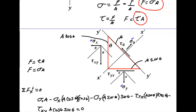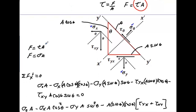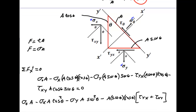Since force equals normal stress times area and shear stress times area, I'm going to sum up all the forces along the x-prime axis. For the normal stress on the x-face, the area is defined as the area across that face, so the force is that normal stress times A. For the adjacent face, the area is A times cosine theta, so the force is the normal stress times A times cosine theta. Anything going in the positive direction is considered positive.